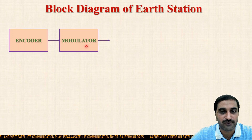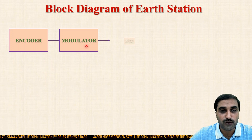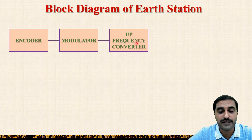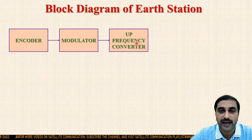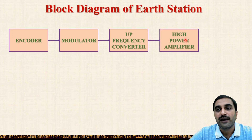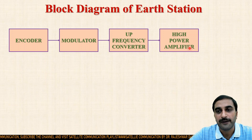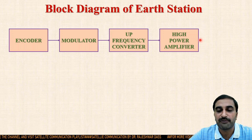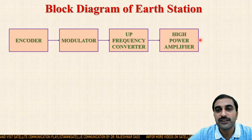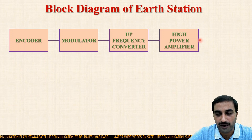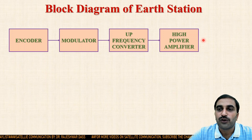So the modulator's output is fed to the up-frequency converter. The up-frequency converter will increase the frequency to the desired uplink frequency. After up-frequency conversion, the signal needs to be amplified, so the signal is fed to the high power amplifier. The high power amplifier amplifies the power of the signal. After this, the transmitting earth station is connected to the antenna for transmission purpose. The antenna converts the electrical signal output from the high power amplifier into an electromagnetic signal and transmits it towards the satellite.